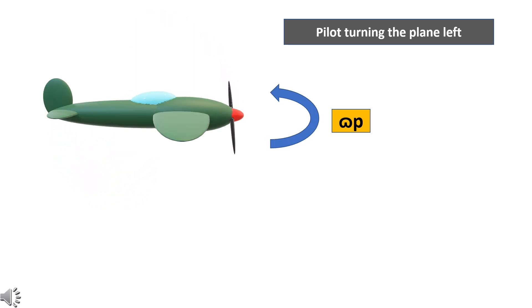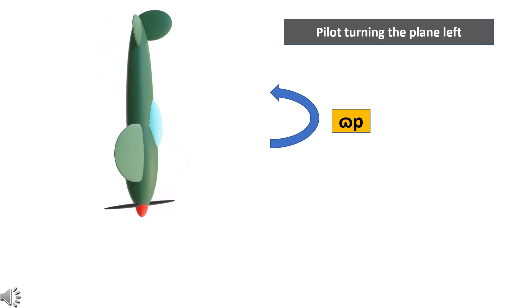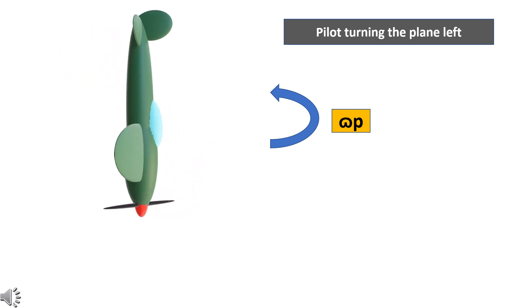Instead, if the aircraft is turned left, the opposite will happen. Now, the gyroscopic moment generated will move the nose down and the tail up, which is called pitch down moment in the language of aerodynamics.